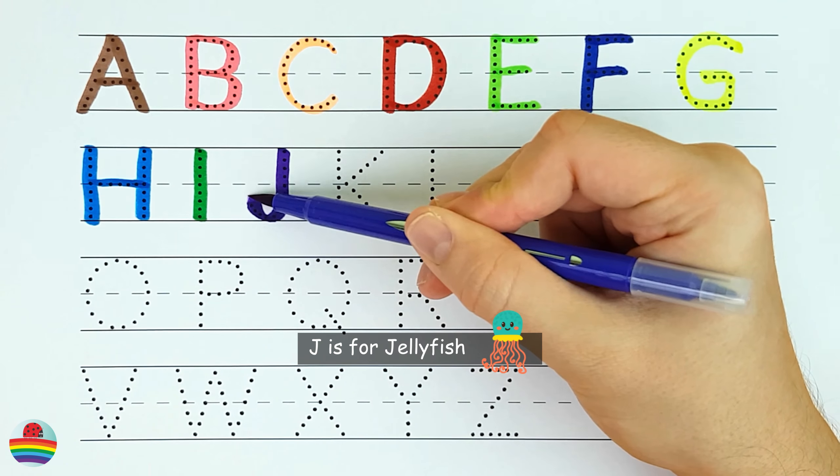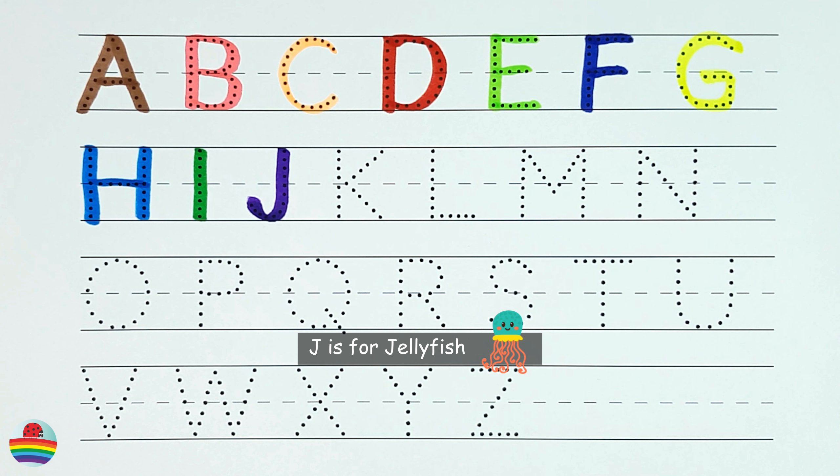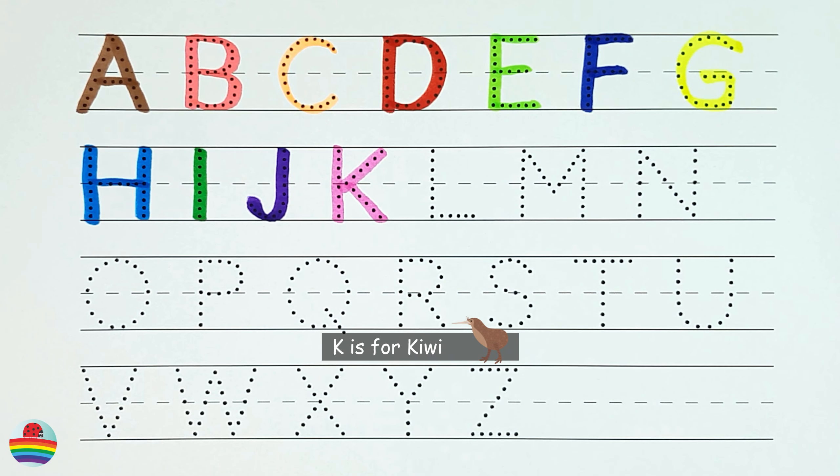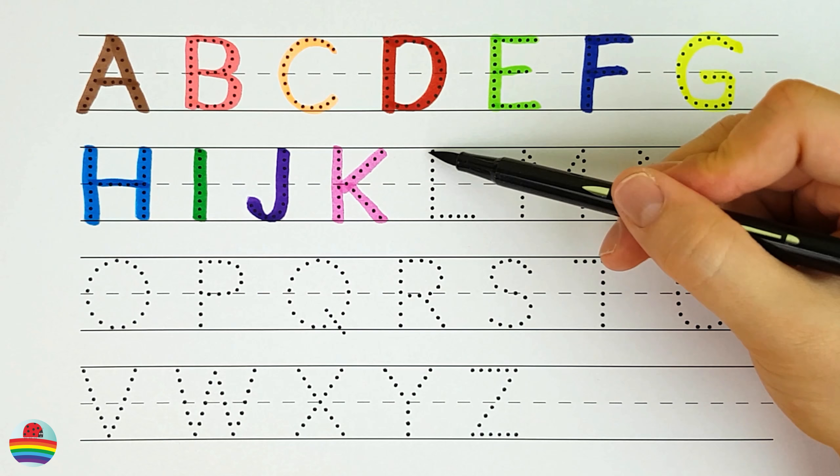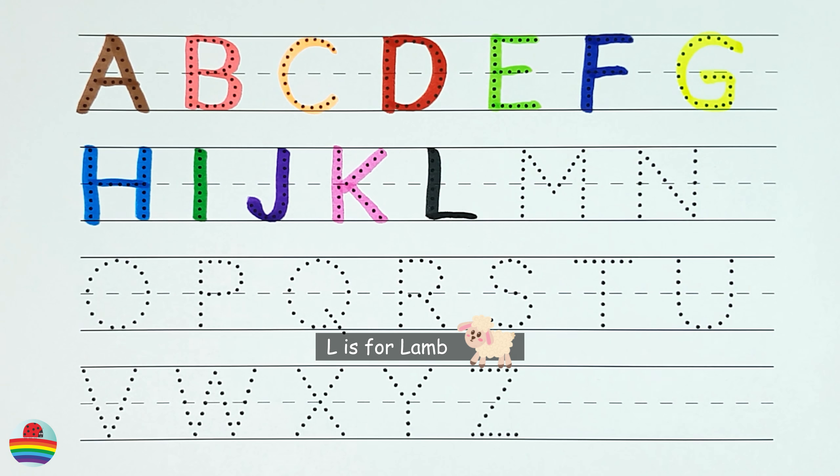J. J is for jellyfish. J. K. K is for kiwi. K. L. L is for lamb. L.